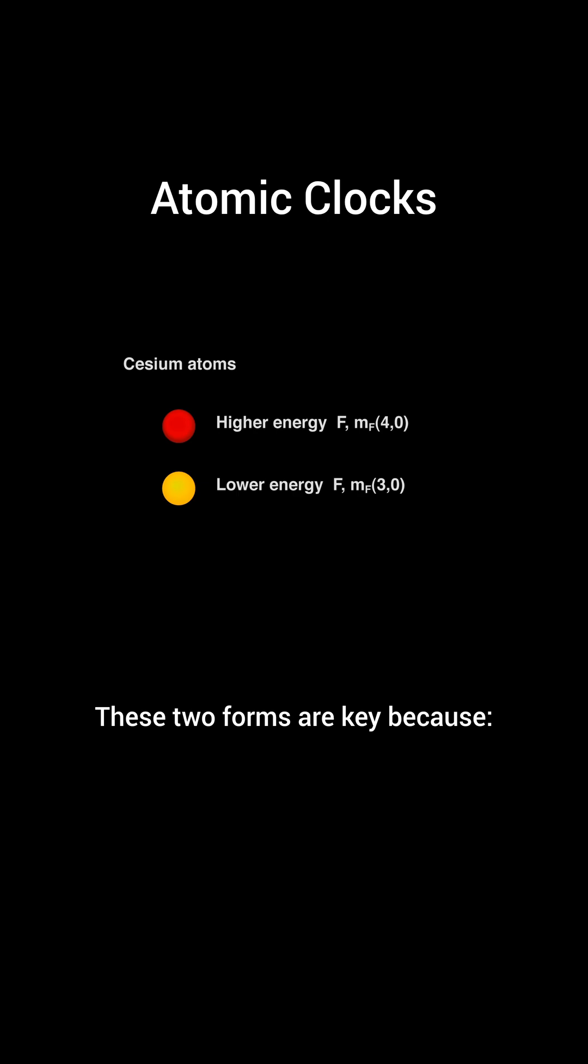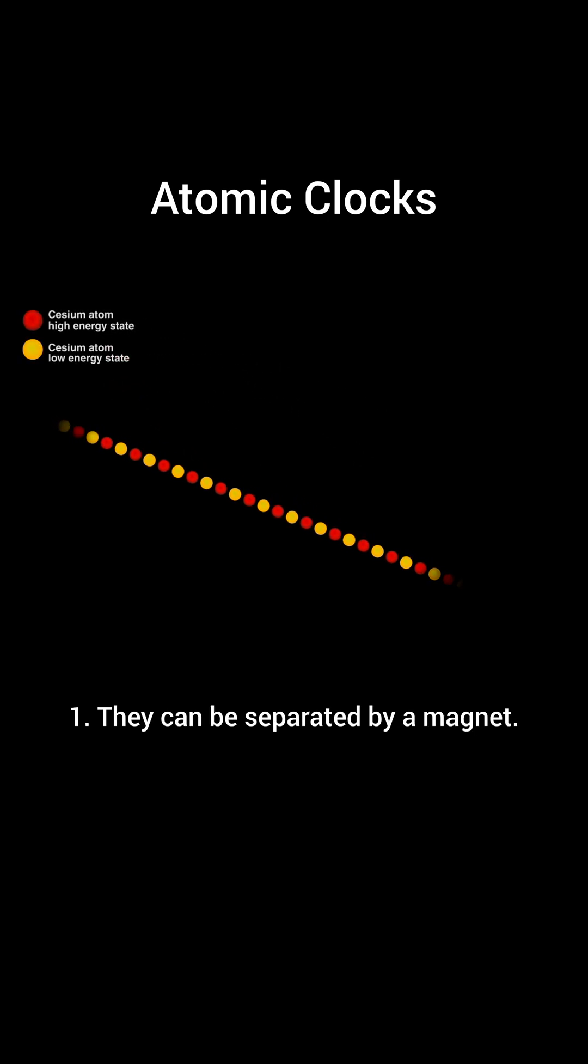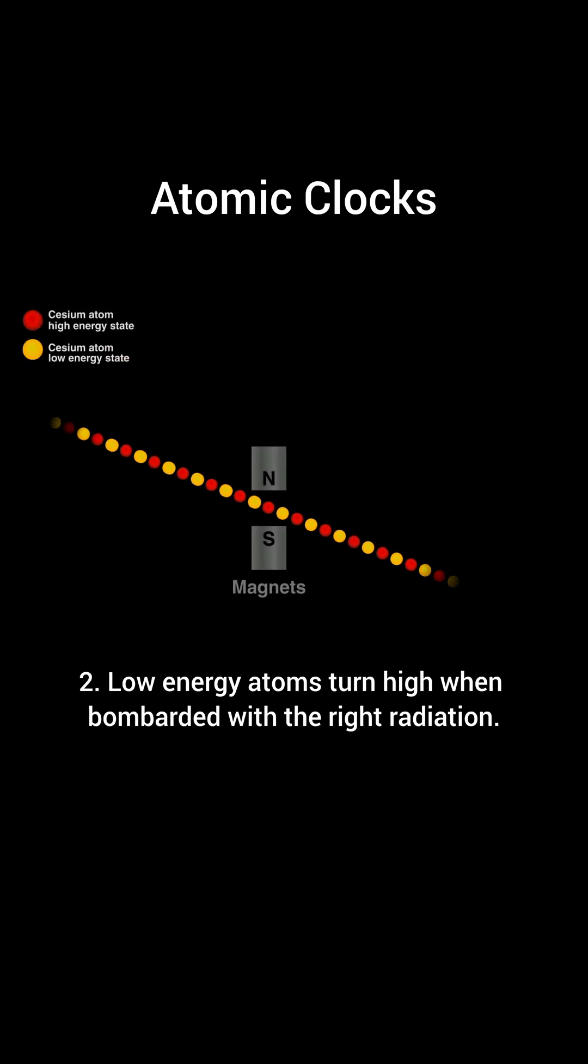These two forms are key because first, they can be separated by a magnet. Second, low energy atoms turn high when bombarded with the right radiation.